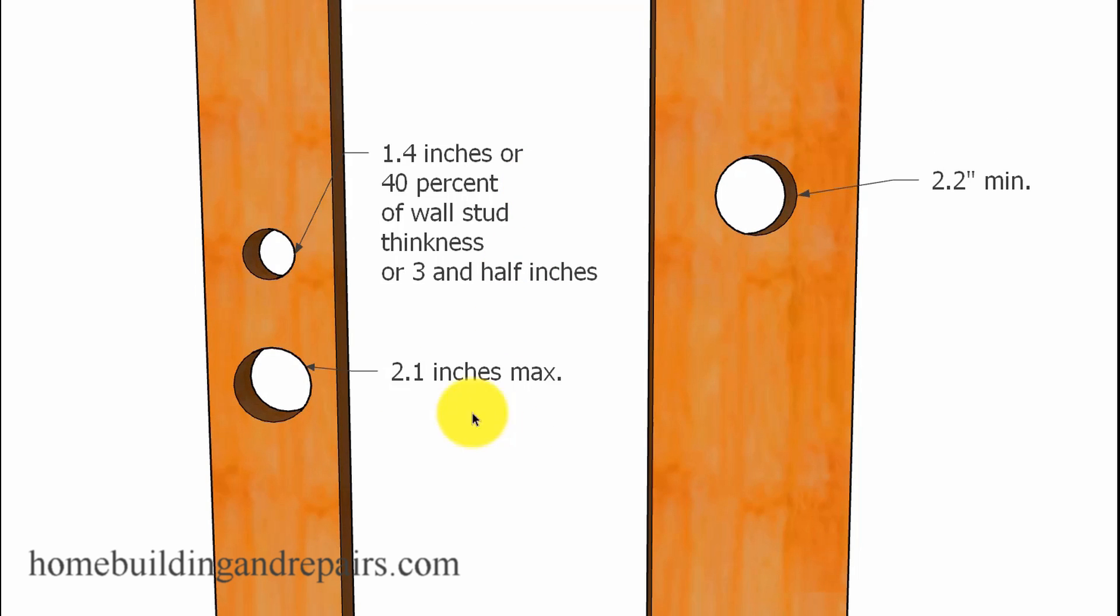Now when it comes to drilling holes, anything more than 40 percent of a wall stud in a load-bearing wall is going to require a double stud, and you're not allowed to go more than 60 percent, period. Sixty-one percent would be a no-no. So you'd probably have to replace the stud and tear apart all the plumbing I would imagine.